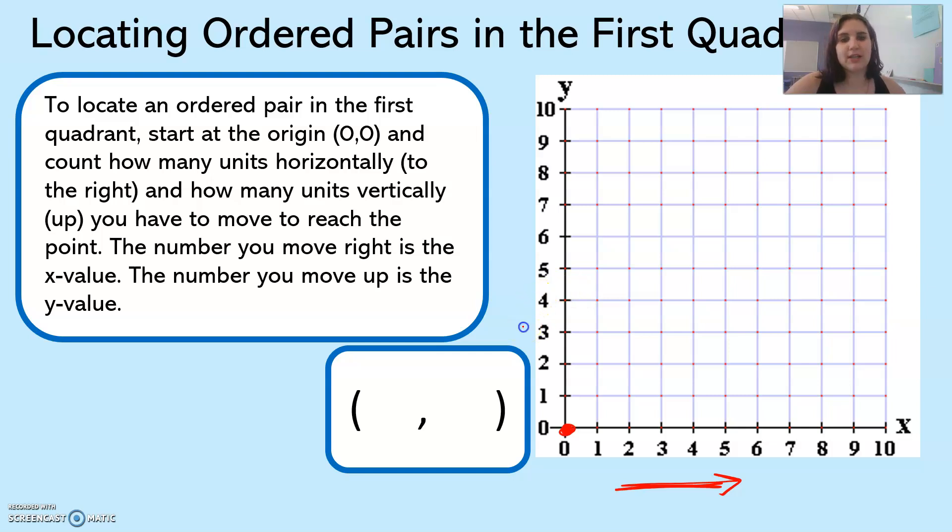And how many units vertically. Vertically goes up and down. The number you move to the right is the x value and the number you move up is the y value. So we go left and right first, up and down second.